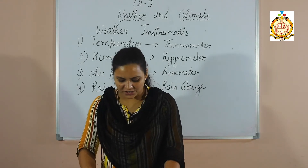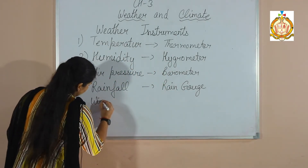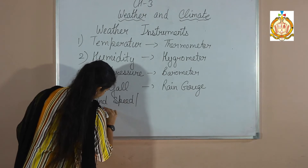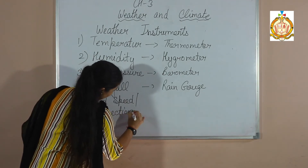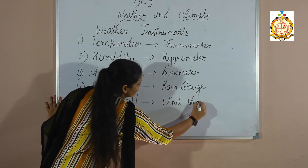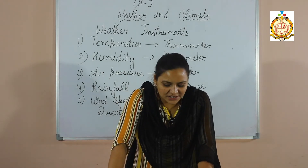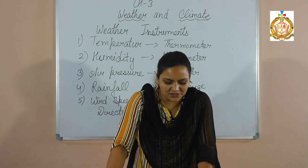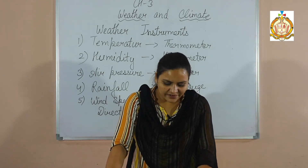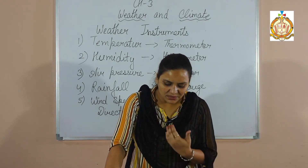Now, observing wind speed and direction. To observe the direction in which the wind is blowing, we use a simple instrument called the wind vane. It comprises a rotating arm pivoted on a vertical rod. An arrow is fixed on the rod pointing in the direction from which the wind is blowing, and from that we get the main direction of the wind.